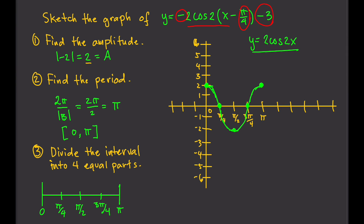Now, remember this negative flips the graph with respect to the x-axis. So the graph of negative 2 cosine 2x is the flipped version. Using another color, we plot the reflected points and connect the dots. This gives us the graph of y equals negative 2 cosine 2x.